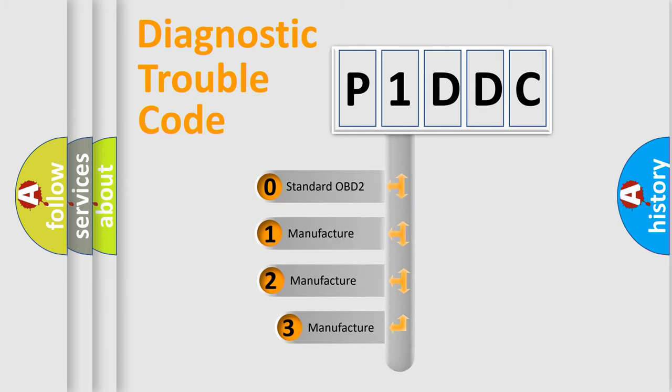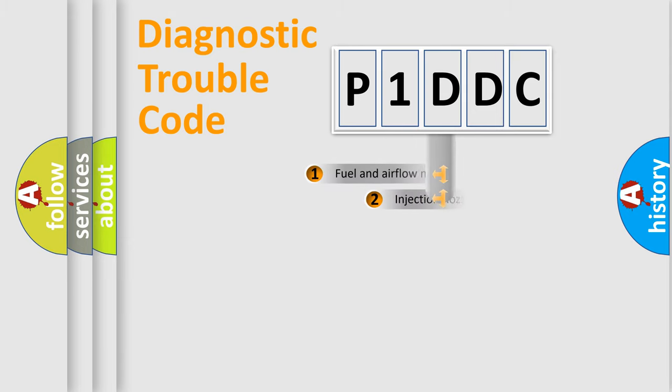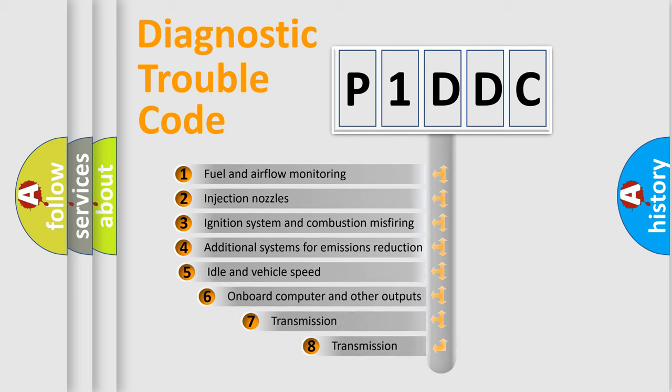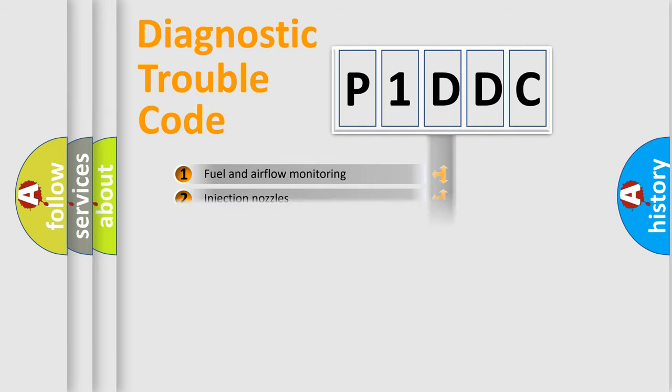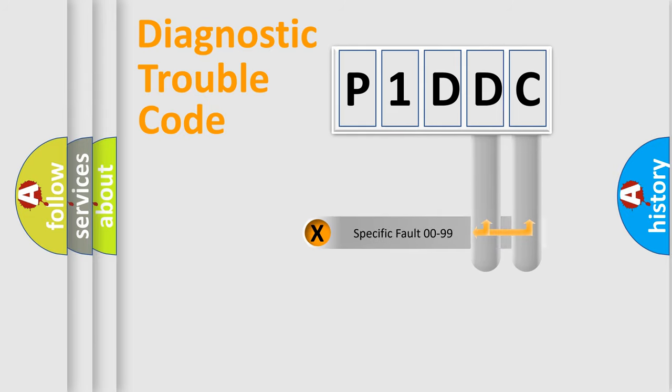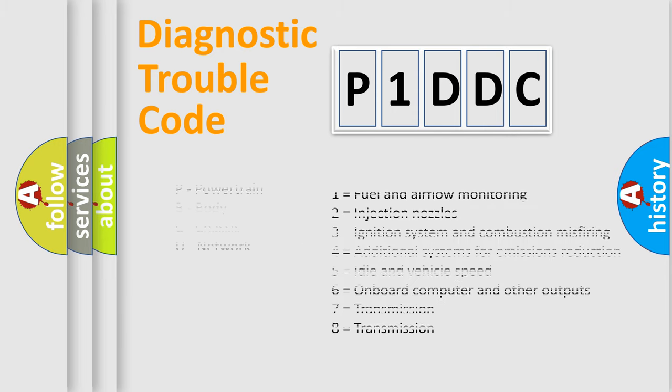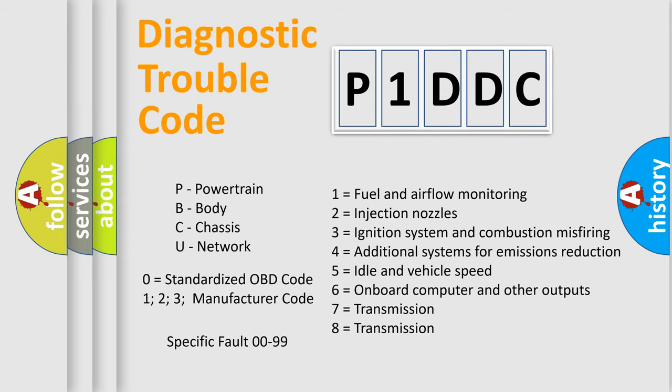If the second character is expressed as zero, it is a standardized error. In the case of numbers 1, 2, or 3 it is a more prestigious expression of the car-specific error. The third character specifies a subset of errors. The distribution shown is valid only for the standardized DTC code. Only the last two characters define the specific fault of the group. Let's not forget that such a division is valid only if the other character code is expressed by the number zero.